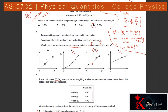Question 8: Two quantities P and Q are directly proportional. Results are plotted on a graph of Q against P. Random errors cause scatter of data points about the line of best fit.